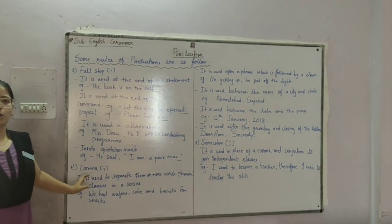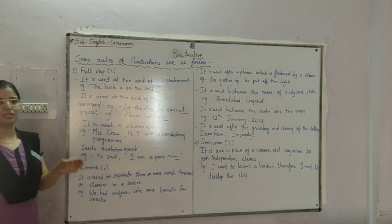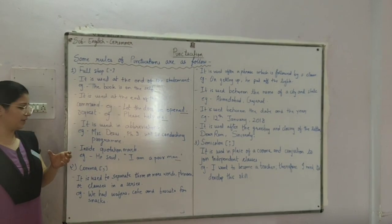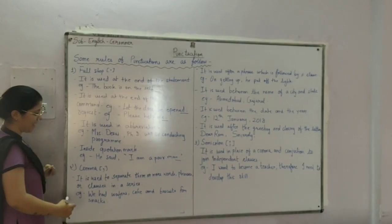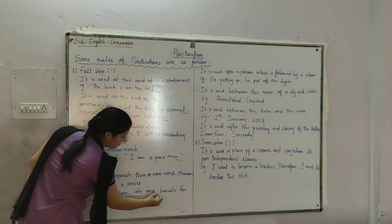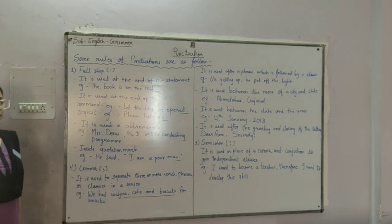Next is comma. It is used to separate three or more words, phrase, or clause given in the sentence. For example, we had samosas, coke, and biscuit for snacks.